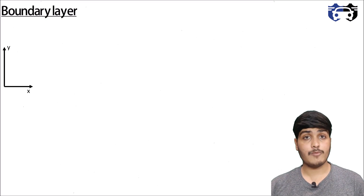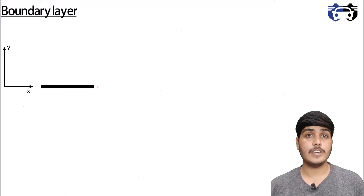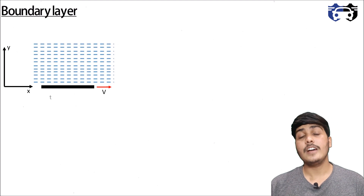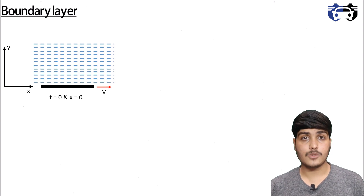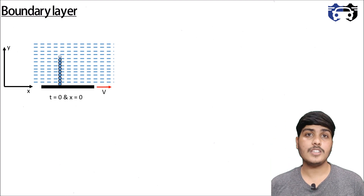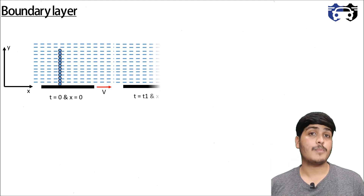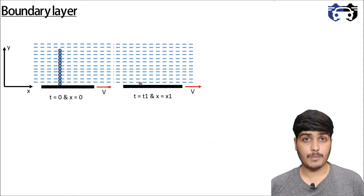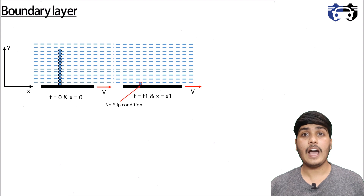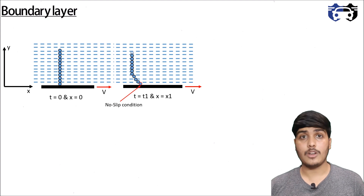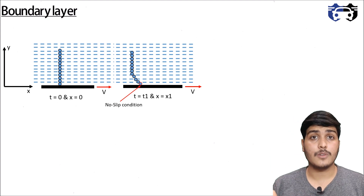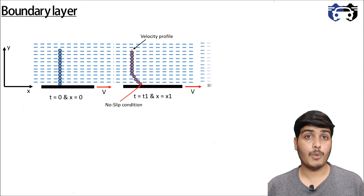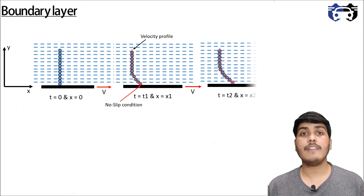Consider the case of a flat plate moving with velocity V in the x-direction while the fluid is stationary. At time t=0 and x=0, all fluid particles align in a straight line. As the plate moves forward, at time t=t1, the bottommost layer sticks to the plate due to the no-slip condition, creating relative motion between all layers above it and forming a velocity profile.